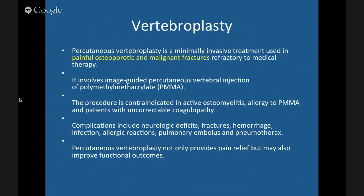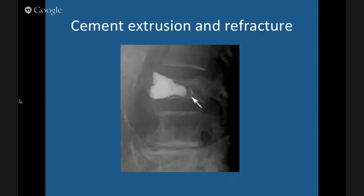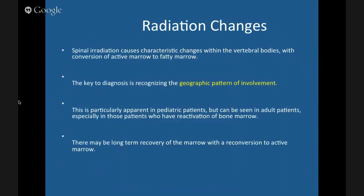Vertebroplasty: cement is injected into vertebral bodies for osteoporosis or metastatic disease to manage pain. Complications include cement leakage and refracturing of the body — leakage is not necessarily symptomatic but can be at times.